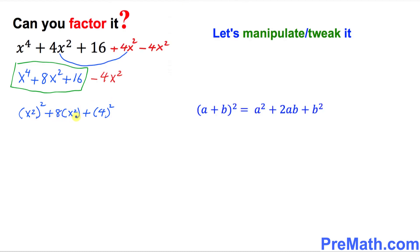Now I want you to compare this with our well-known formula: (a + b)² = a² + 2ab + b². So this part represents simply (x² + 4) — the complete square — where x² is a and 4 is b.